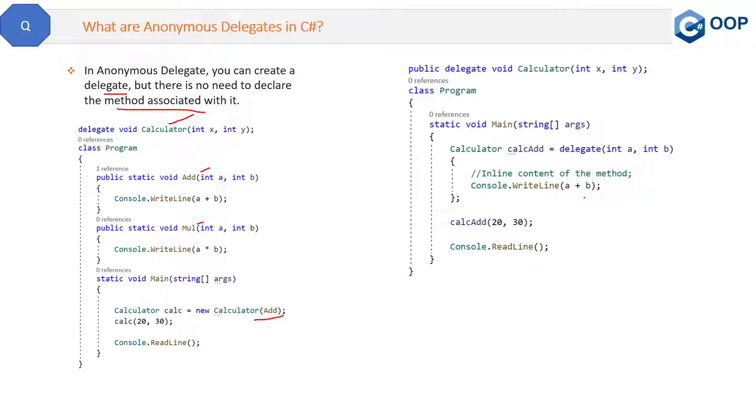See the code. Do you see any methods or functions here in the program? This is the main method, and there is no such method like add, delete, or multiply. But still, there is a delegate here. We have declared this Calculator with two parameters and one return type, which is void. So how it is, basically?